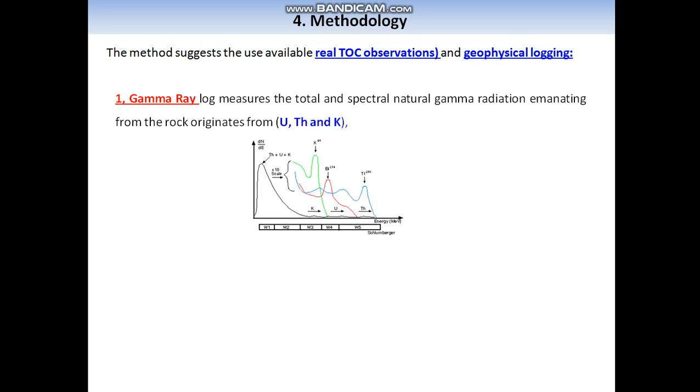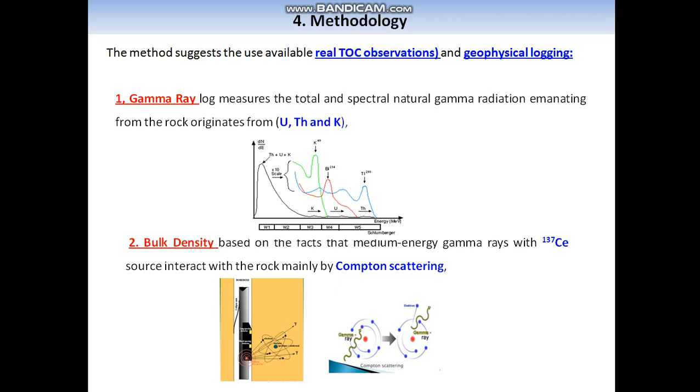The first log is Gamma Ray log, which measures the total and spectral natural gamma radiation emitting from the rock originating from uranium, thorium, and potassium.